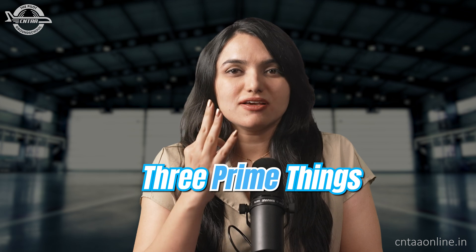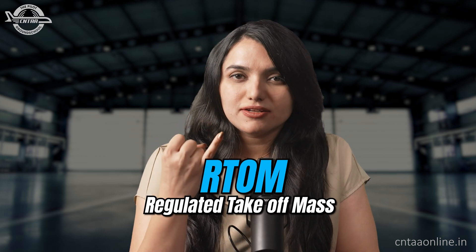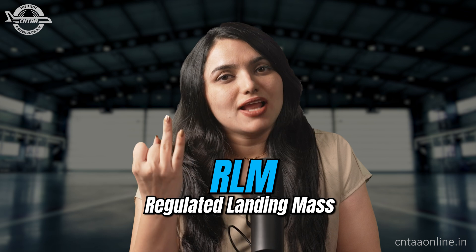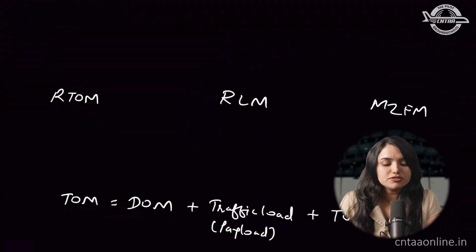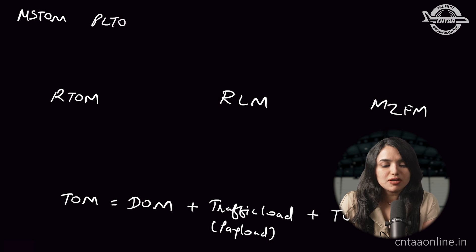Let's check what factors would affect this. There are three prime things to be considered when we talk about the maximum takeoff weight for a given flight: one is the regulated takeoff mass, the second is the regulated landing mass, and the third is maximum zero fuel mass. The regulated takeoff mass is dependent on two things: maximum structural takeoff mass and performance limited takeoff mass — whichever is the least will be the regulated takeoff mass.